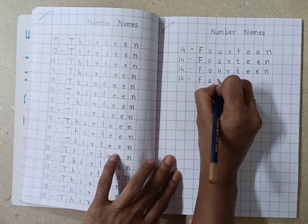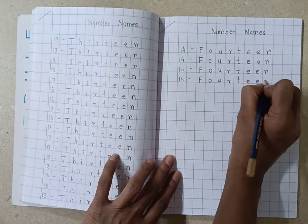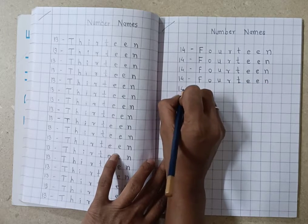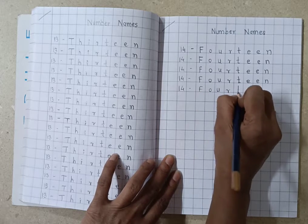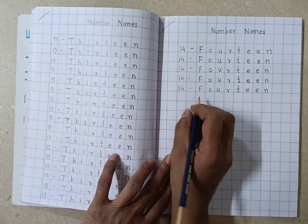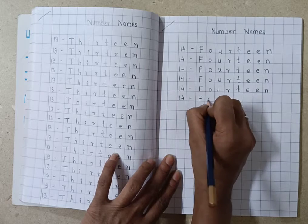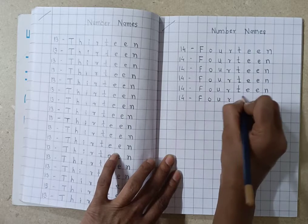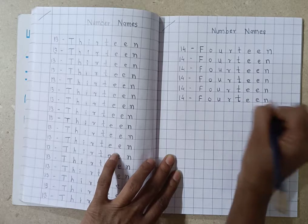Write down and write down. F-O-U-R-T-E-E-N-14. You can also write down and learn. Okay, F-O-U-R-T-E-E-N-14.